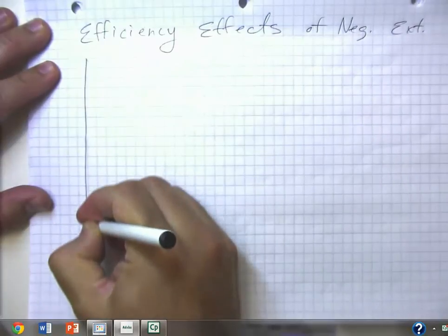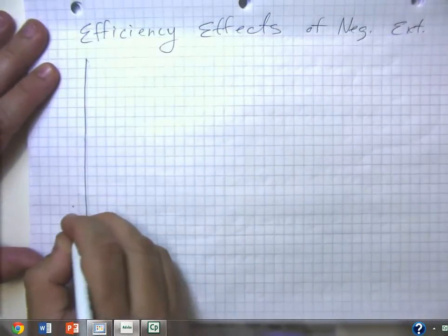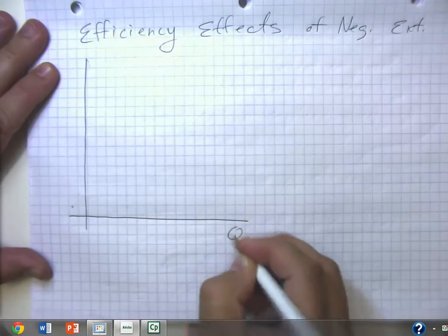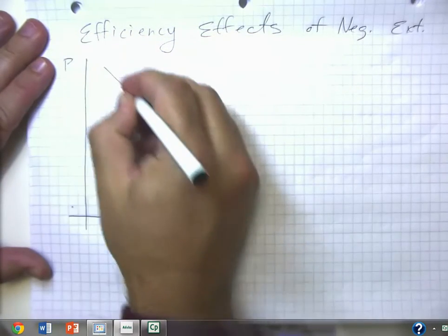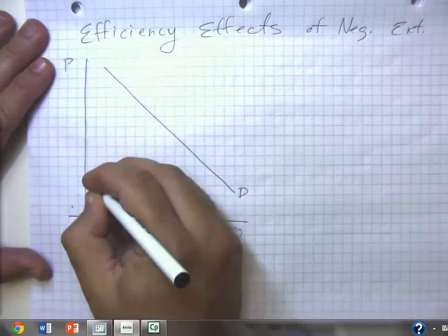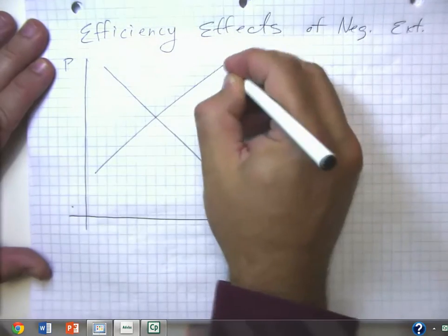So going back to our good old supply and demand diagram, price and quantity, we're going to see we have a demand curve here, supply curve here.